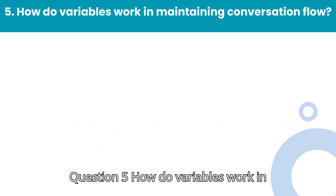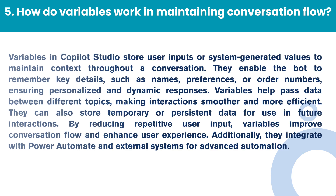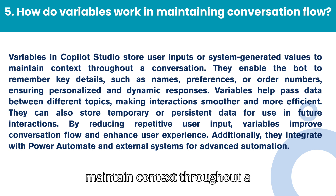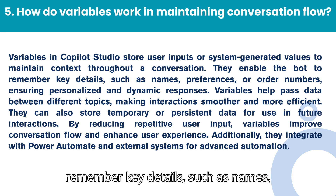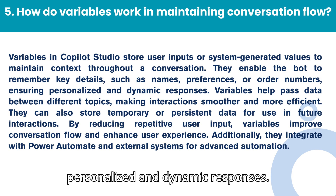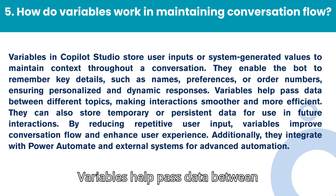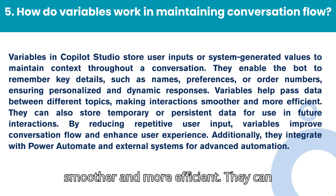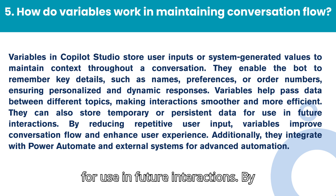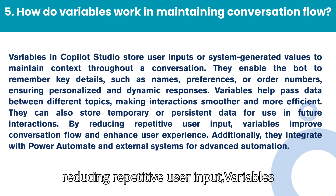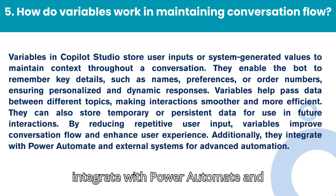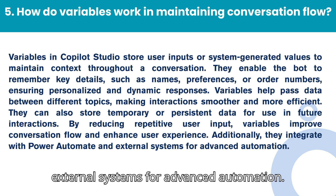Question 5: How do variables work in maintaining conversation flow? Variables in Co-Pilot Studio store user inputs or system-generated values to maintain context throughout a conversation. They enable the bot to remember key details such as names, preferences, or order numbers, ensuring personalized and dynamic responses. Variables help pass data between different topics, making interactions smoother and more efficient. They can also store temporary or persistent data for use in future interactions. By reducing repetitive user input, variables improve conversation flow and enhance user experience. Additionally, they integrate with Power Automate and external systems for advanced automation.